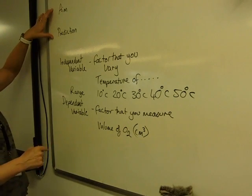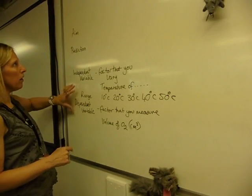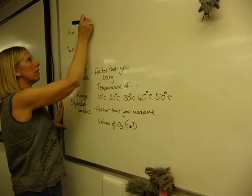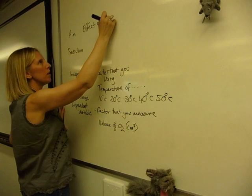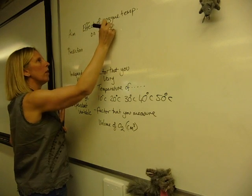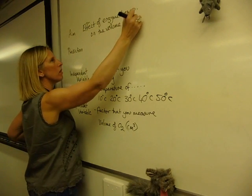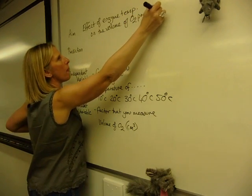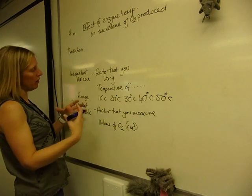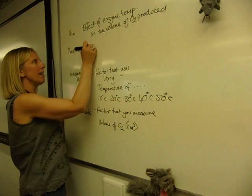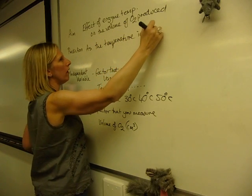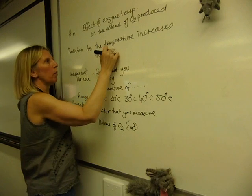Now we can go back to the aim and the prediction, because you need to link in the thing that you're varying with the thing that you're measuring. So the aim of the experiment, and I'll use these two, is to investigate the effect of enzyme temperature on the volume of oxygen produced.